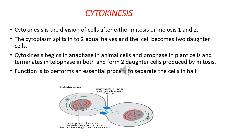Cytokinesis begins in anaphase in animal cells and prophase in plant cells, and terminates in telophase in both, forming two daughter cells produced by mitosis. Its function is to perform an essential process to separate the cell in half. In this diagram you can clearly see that in the middle, a contractile ring creating a cleavage furrow is formed, splitting into two daughter cells.